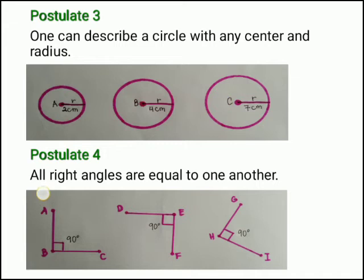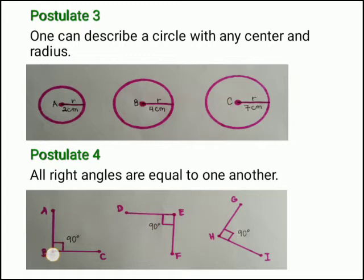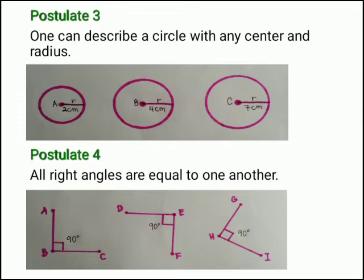Postulate four: all right angles are equal to one another. Right angles have 90 degrees, so 90 degrees is equal to 90 degrees since all right angles are equal. For example, we have angle ABC, angle DEF, and angle GHI — these three are all right angles, and they are all equal to one another since they all measure 90 degrees.